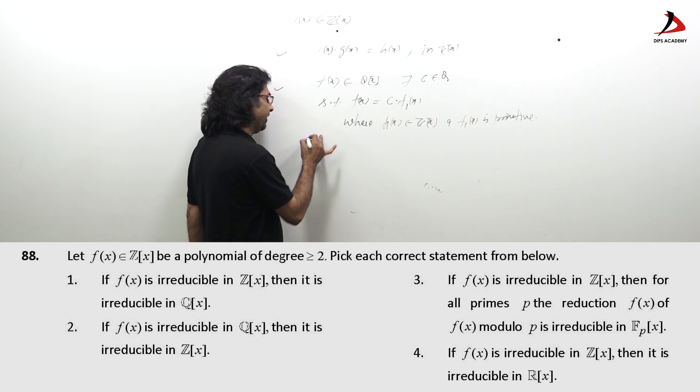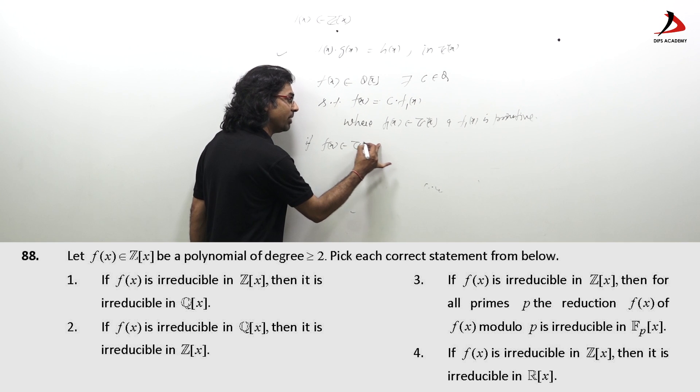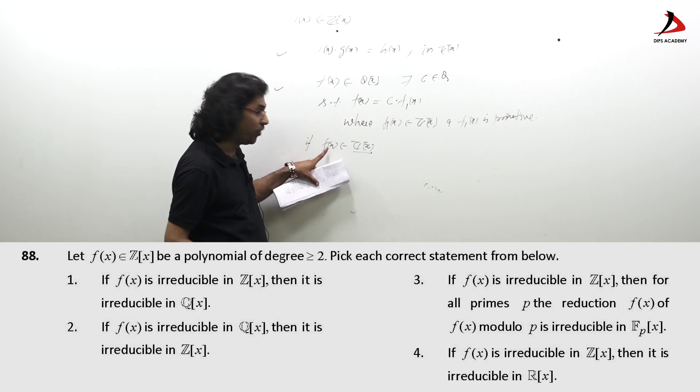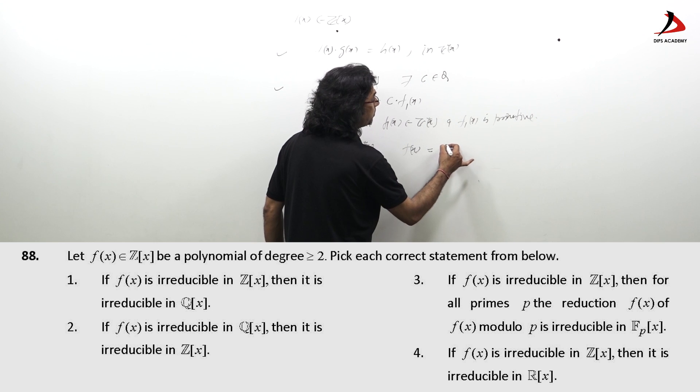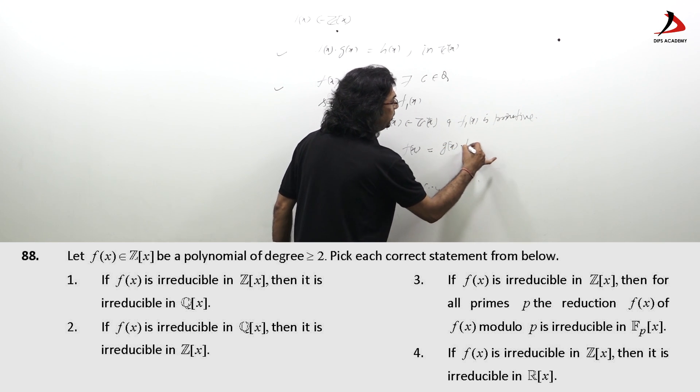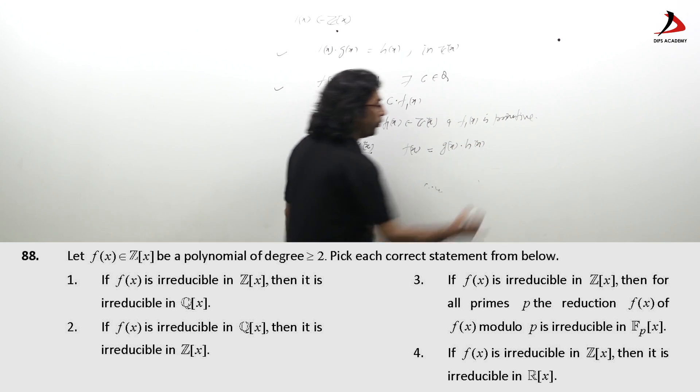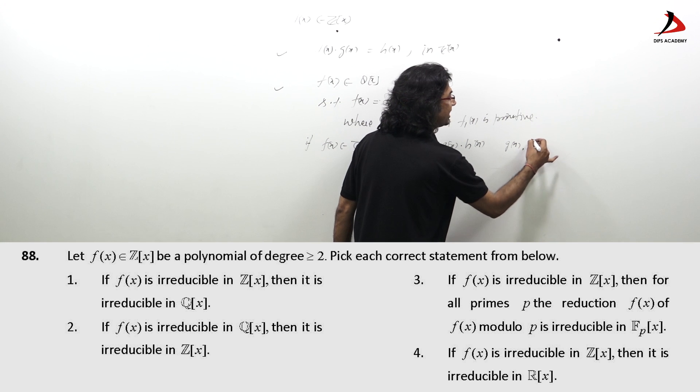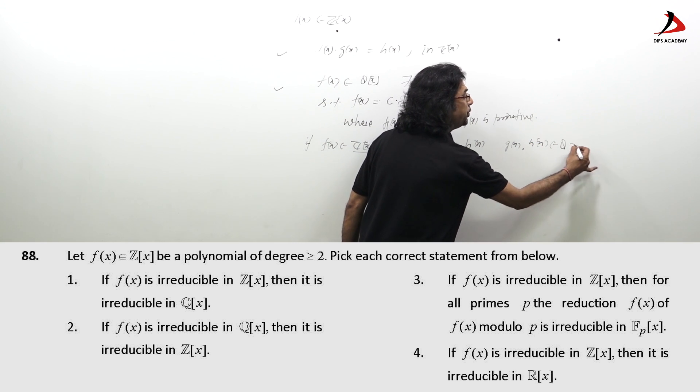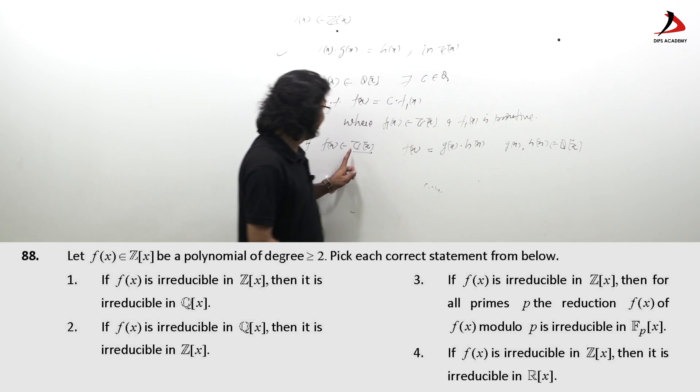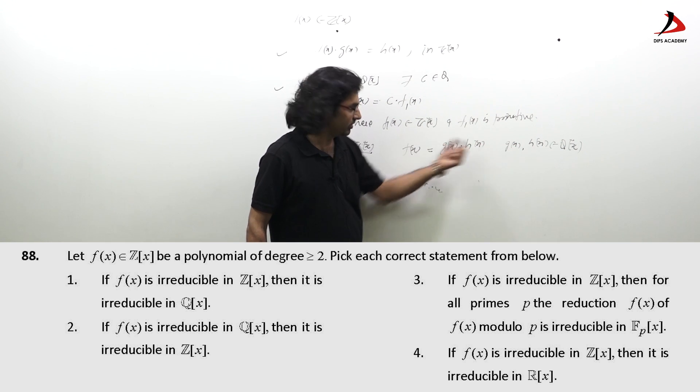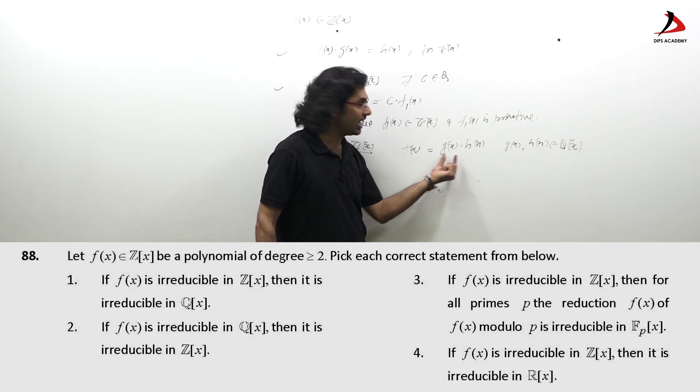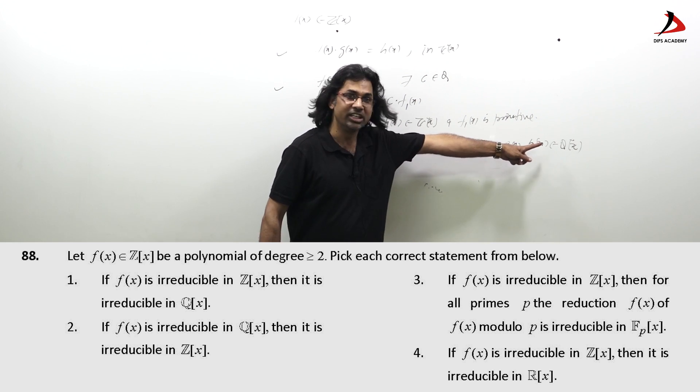Now, my claim if f(x) belongs to Z[x], remember Z[x], coefficients are integer, if f(x) equal to g(x) into h(x) where g(x) and h(x) belongs to Q[x], that means I have taken f is not irreducible over Q. That means we have reduced f as a polynomial over Q[x].